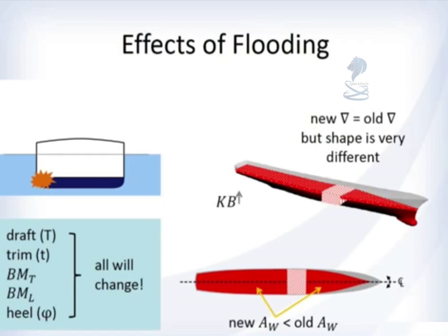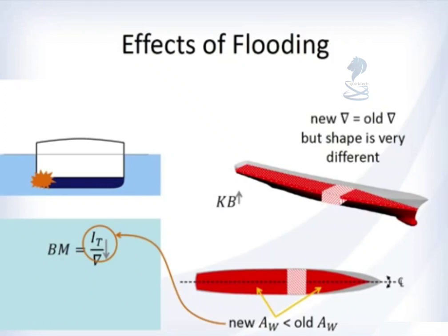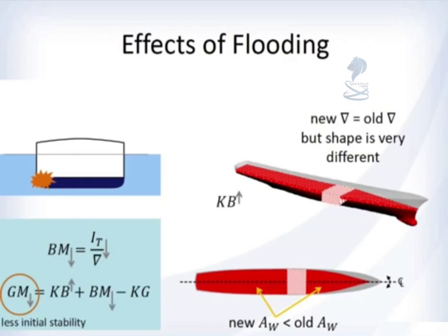The new underwater volume equals the old underwater volume, but the shape is very different. The center of buoyancy has increased because draft has increased, meaning KB has increased. The new centerline waterplane area is less than the old waterplane area because the flooded section is missing. This decreases the second moment of area about the centerline, so BM decreases. KB goes up a little, but BM decreases a lot more. The end result is less initial stability. This change in GM under the damage condition is what we call calculating damage stability.